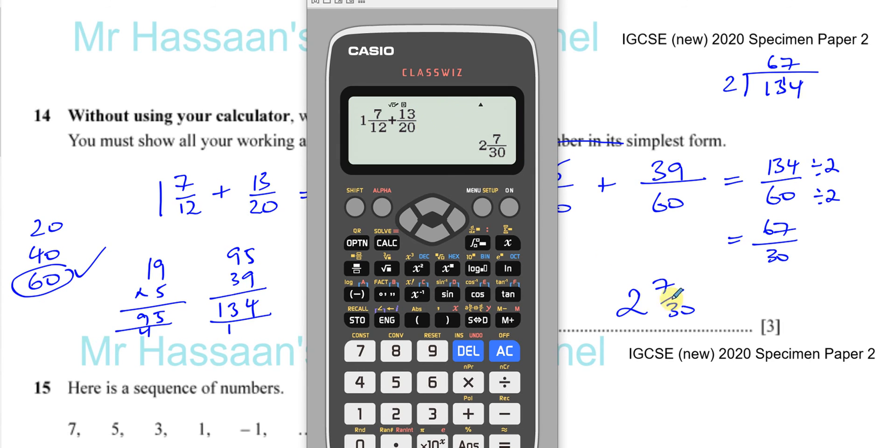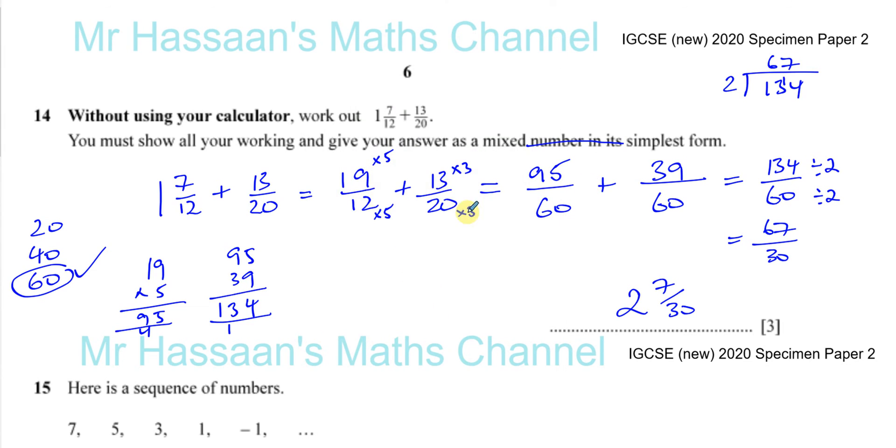Using the calculator is fine for checking your answer, but if you just wrote down the answer in this question as 2 and 7/30, you wouldn't get any marks. Because it says without using your calculator, they want to see where you make the denominators the same - that shows them you know exactly what you're doing in adding two fractions together.